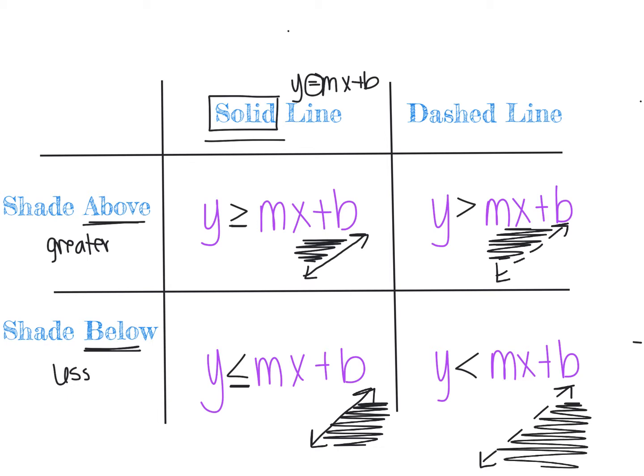The process of plotting points on the line is exactly the same as graphing y = mx + b. But whether you draw a solid or dashed line to connect those points, and which side you shade to represent all solutions, depends on the inequality sign.